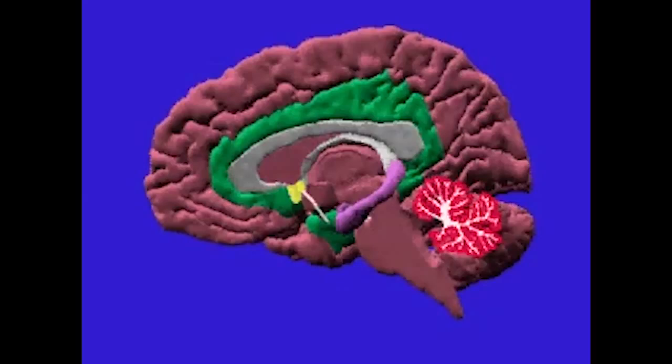This animation combines both the green cingulate gyrus and parahippocampal gyrus together with the hippocampus, which make up the limbic lobe. The hippocampus is going to be pulled out, and you're going to see the fornix fibers coming from the hippocampus going down to the septal region and the hypothalamus as they loop over the anterior commissure, which goes across.